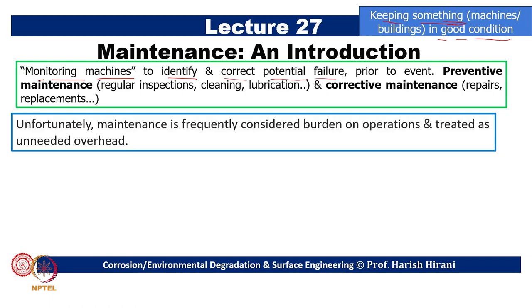In my own words, maintenance is basically monitoring machines to identify and correct potential failure. Earlier I gave emphasis on faults needing to be identified and corrected. When failure happens we cannot correct it immediately — maybe for the next design we can. That is why we use the word 'potential failure': a fault which will lead to failure. So we monitor machines to identify and correct potential failure before it really happens.